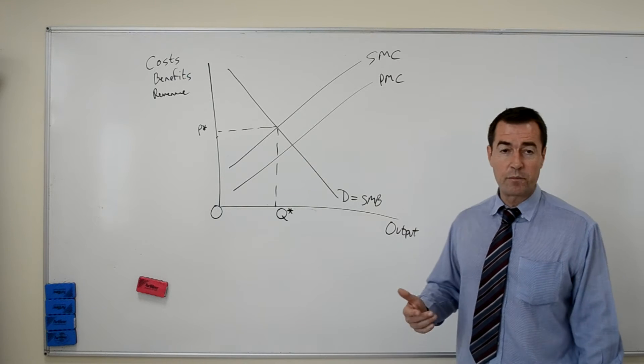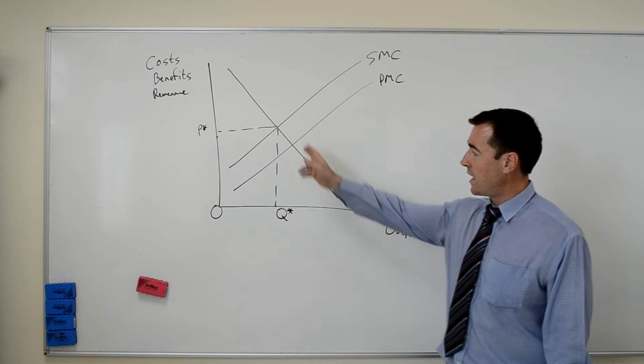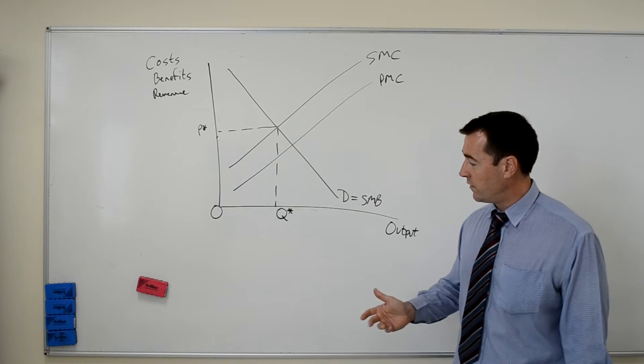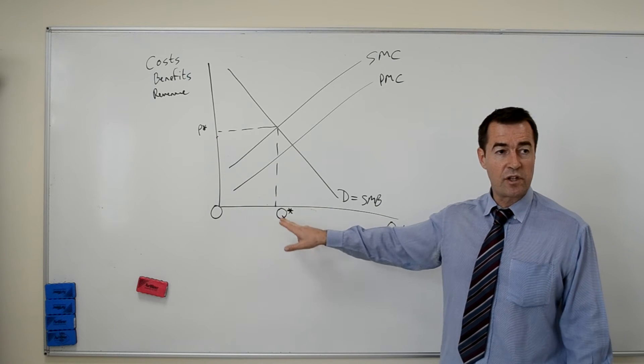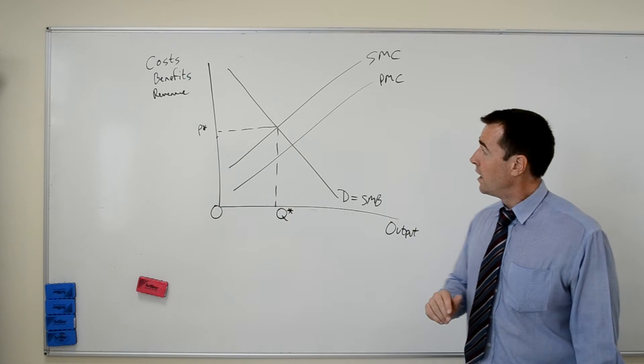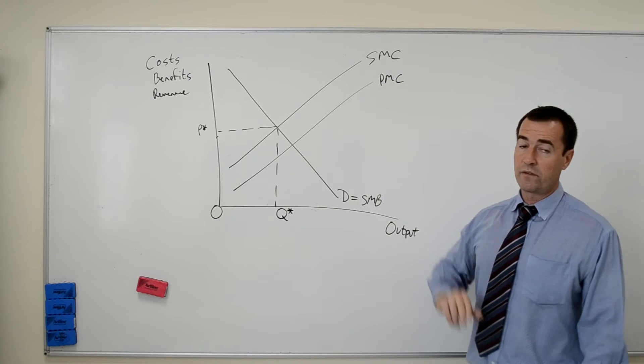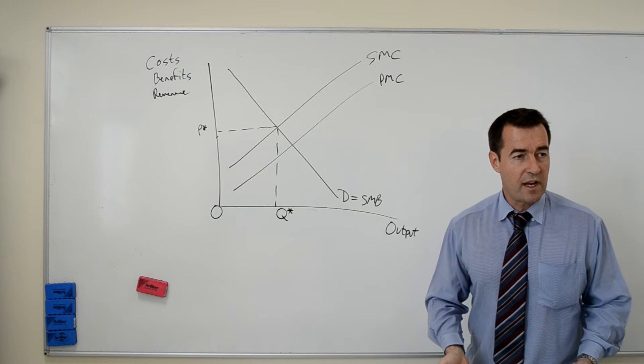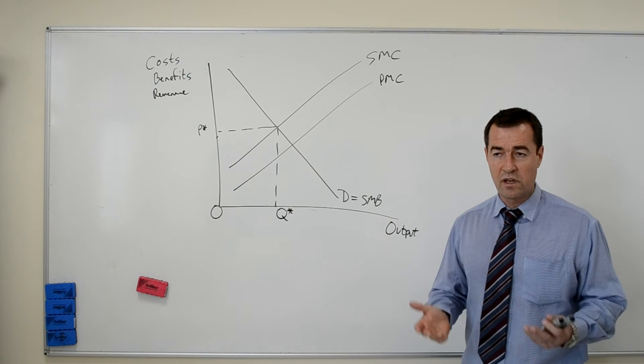Well, as you can see, the best output level for society is where the SMC curve cuts the SMB curve, the demand curve in this case. The output level is Q-star and the price is P-star. We know that the social marginal cost equals the private marginal cost plus the external marginal cost, in this case the pollution.